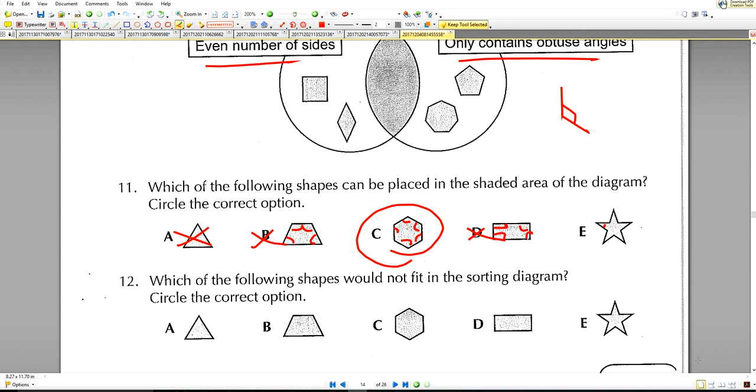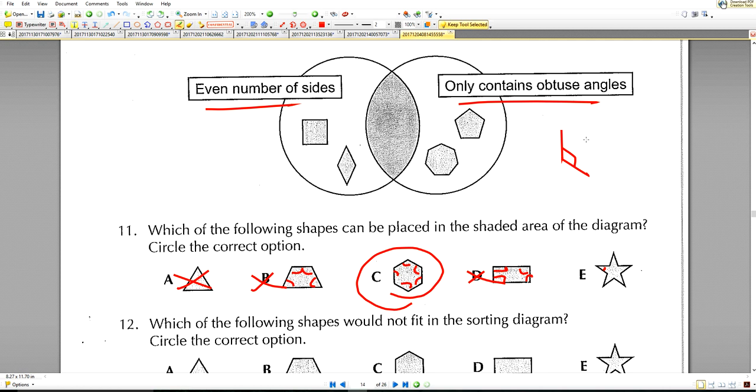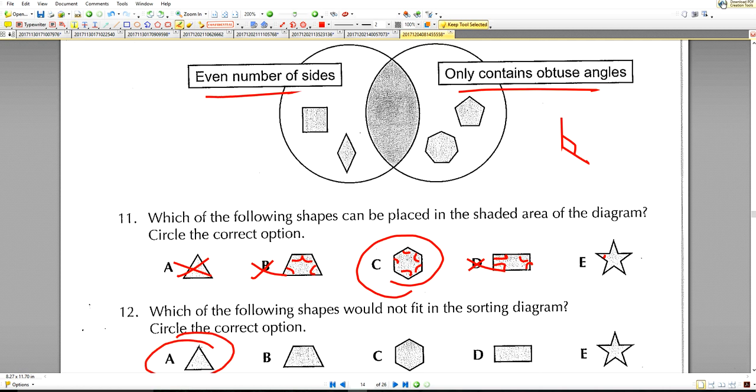Last question. Which of the following shapes would not fit in the sorting diagram? We've got to have even number of sides, and this shape has got an odd number of sides, which is A. Thank you much for joining us on this video. If you like the video, please give us a thumbs up and subscribe for further videos. See you on the next video. Thank you very much, bye.